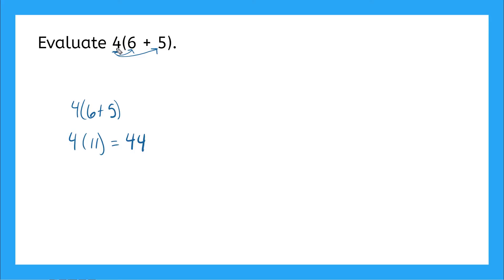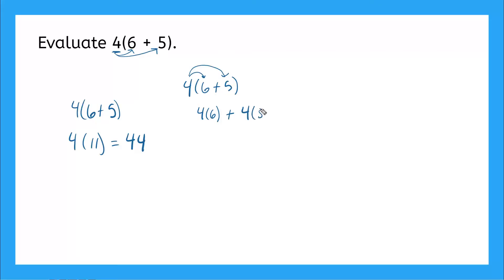It goes like this. We would take our 4 and we're going to multiply across what's in our parentheses. We're going to multiply it by the 6, and we're going to multiply it by the 5. So this turns into 4 times 6, we keep our addition sign right between our 6 and our 5, and we get 4 times 5. Then we can do our multiplication: 4 times 6 gives me 24, plus 4 times 5 gives me 20. And when I add these together, I get 44.